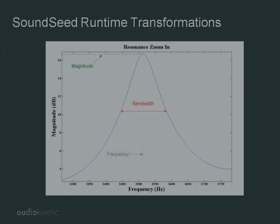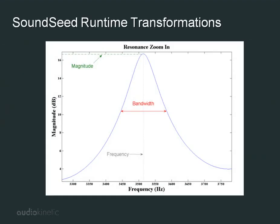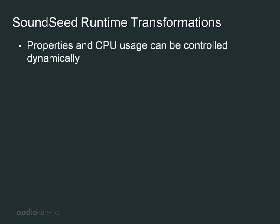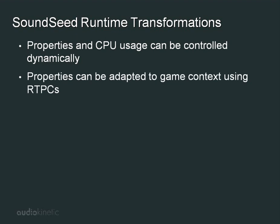An unlimited number of sound variations can be created with SoundSeed Impact by modifying the real-time resonance properties. These properties — frequency, bandwidth, and magnitude — can be used to determine and randomize the timbral quality of the synthesis. Of course, all of these properties, as well as CPU usage, can be controlled dynamically to adapt to the context within your game using real-time parameter controls.